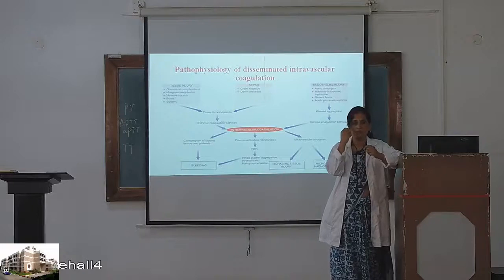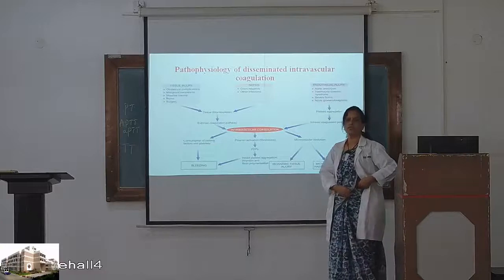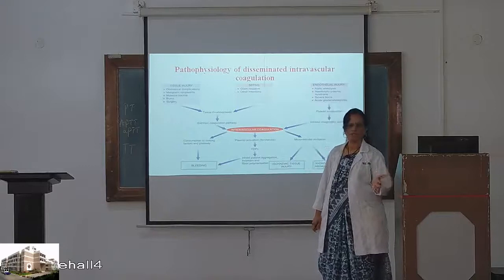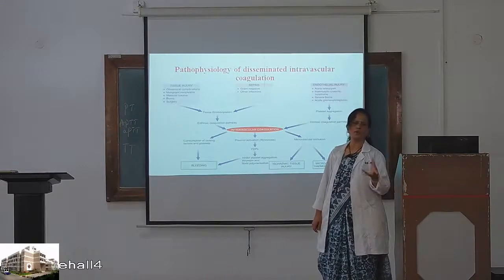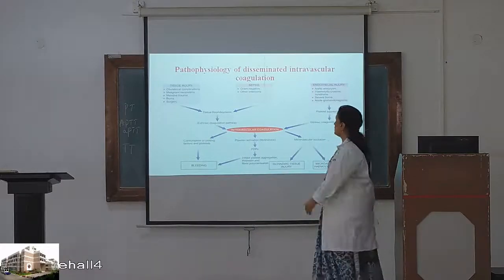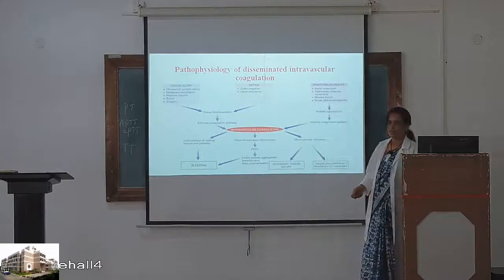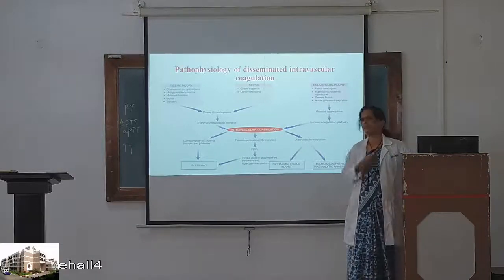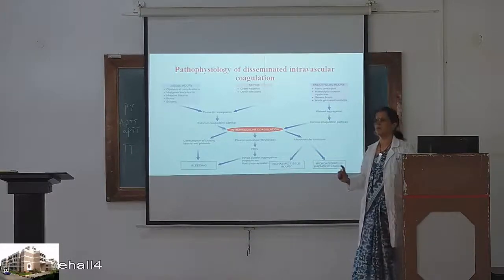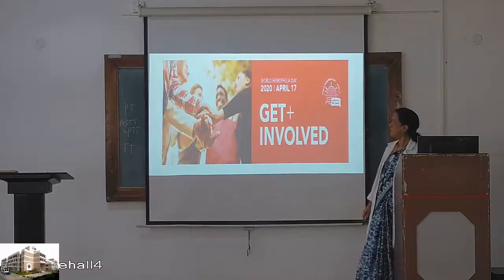In DIC, bleeding can occur in any organ. However much blood is transfused, it fails. We give fresh frozen plasma because it contains all the clotting factors, but it is sometimes very difficult to save these patients. Everything is prolonged — clotting time, bleeding time — and there is thrombocytopenia. All tests show prolonged values and all factors are reduced.